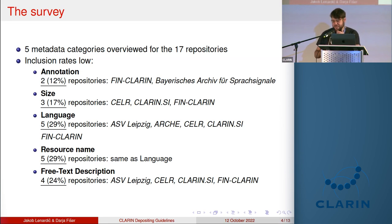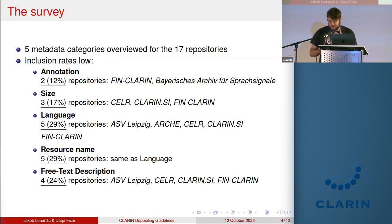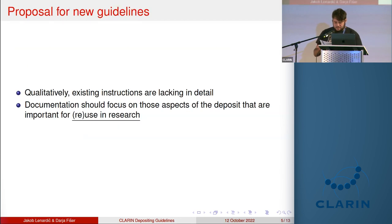Only two out of the 17 guidelines mention that annotation should be included. Instructions for size fare a bit better, included in three guidelines. Instructions for documenting language and resource name are the best, included in almost a third of the guidelines. Instructions for free text descriptions are included in four guidelines, but even in these cases the instructions are generally quite sparse.